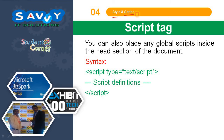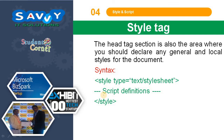For styles and scripts: the script tag allows you to place global scripts inside the head section. Scripts are represented with <script type="text/javascript"> and closed with </script>, with the script definitions in between. Similarly, the style tag — the head section is also where you declare any general and local styles for the document. Its syntax is <style type="text/css"> and closed with </style>, with style definitions in between.